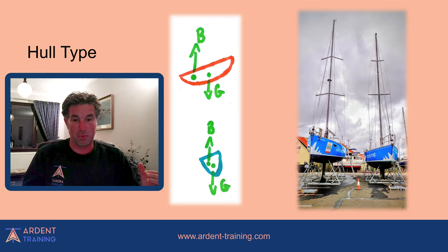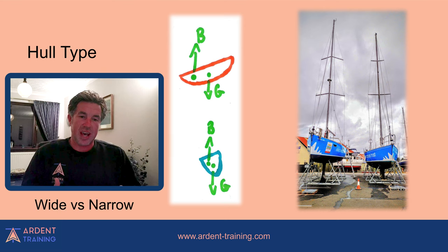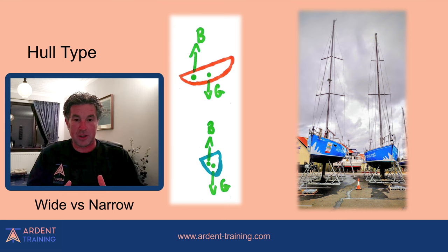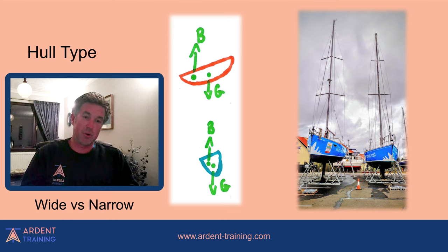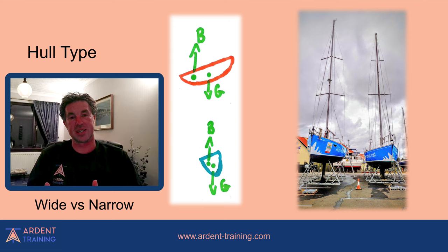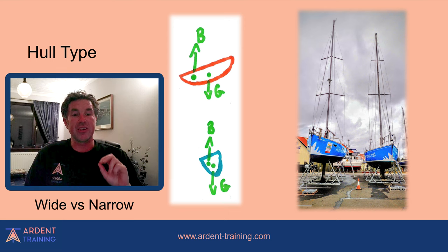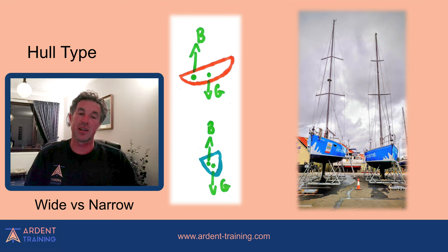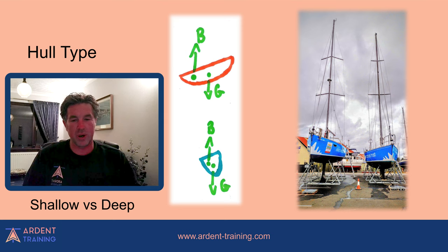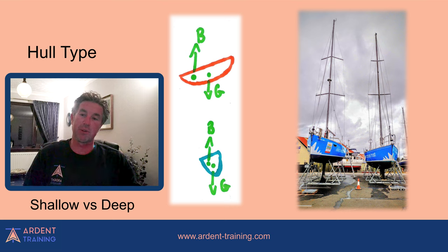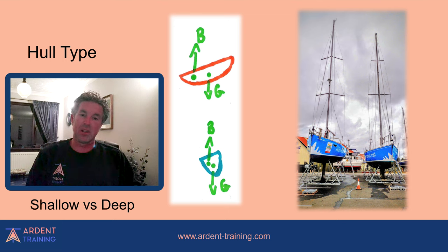What factors affect the stability curve and righting moment? Hull type is a big one, but also weight, draft, shape, and other design characteristics. Looking at wide versus narrow: for the same angle of heel, the buoyancy force on a wide boat acts much further out to the side, meaning the righting moment is much greater on a wide vessel than a narrow one at that angle. Shallow versus deep draft also matters — a deeper draft vessel can get weight much lower thanks to the keel, lowering the center of gravity.